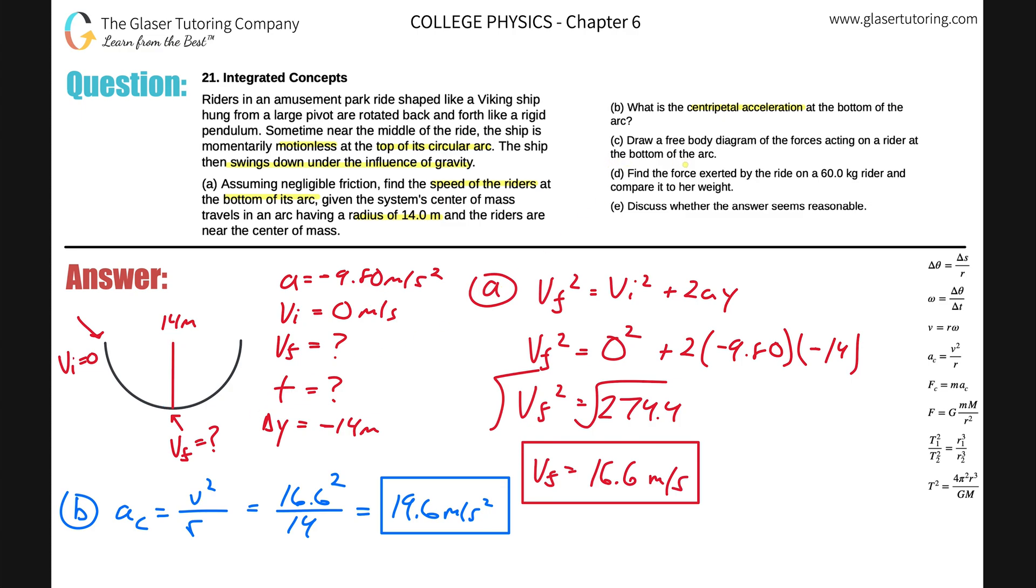Let's move on to letter C. Draw a free body diagram of the forces acting on the rider at the bottom of the arc. So we're looking at it at the bottom of the arc. Take a little coordinate system here. The center of the coordinate system will now be the rider. It says draw a free body diagram of the force acting on the rider. So just the rider.